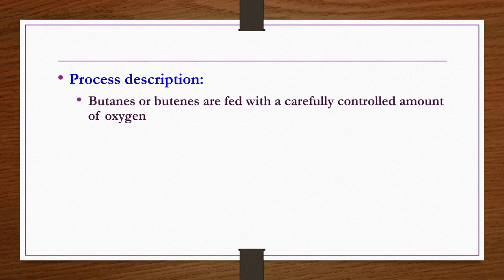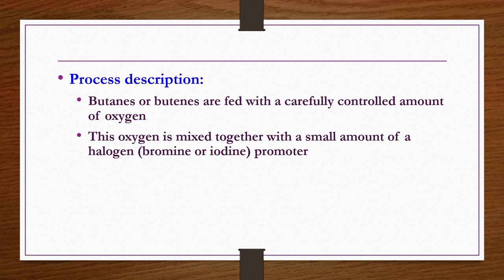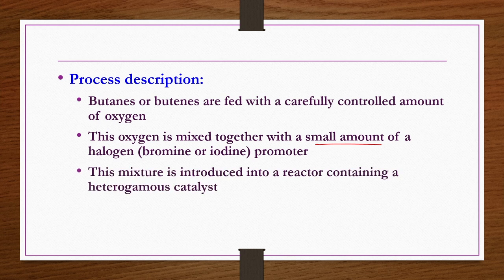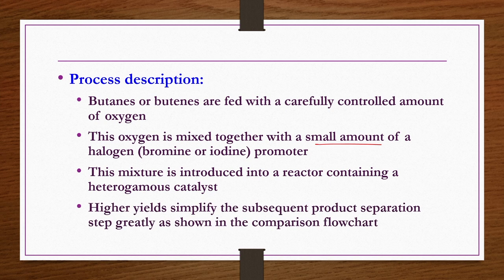Process description of oxy-dehydrogenation of butane: butanes are fed with a carefully controlled amount of oxygen mixed with a small amount of halogen promoter — either bromine or iodine. This mixture is introduced into a reactor containing a heterogeneous catalyst. Higher yields greatly simplify the subsequent product separation steps, requiring fewer unit operations compared to conventional dehydrogenation.